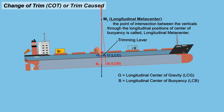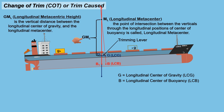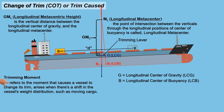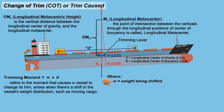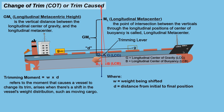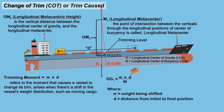The vertical distance between the longitudinal center of gravity and the longitudinal metacenter is called the longitudinal metacentric height (GML). When a weight is shifted through a distance, the ship's G is shifted to G1 and a trimming moment is produced. Trimming moment refers to the moment that causes a vessel to change its trim, arising from a shift in the vessel's weight distribution, such as moving cargo. The trimming moment equals weight (w) times distance (d), where w is the weight being shifted and d is the distance from the initial to the final position of the weight's center of gravity. To calculate the shift of G: GG1 = (weight × distance) ÷ ship's displacement.